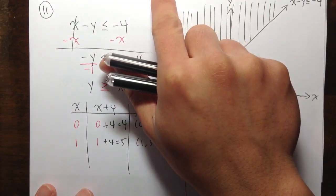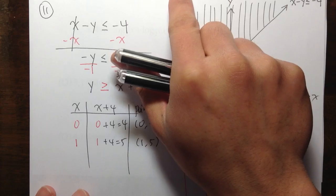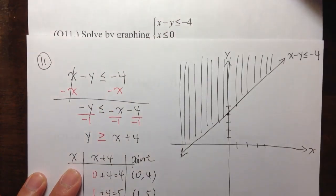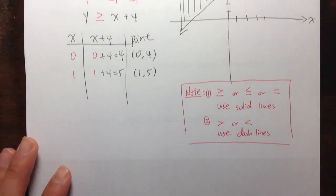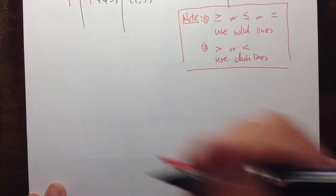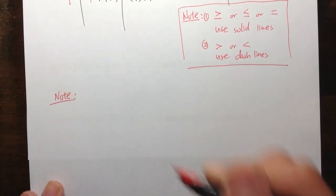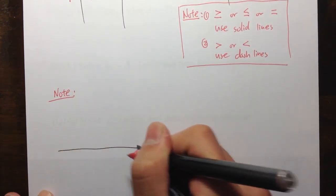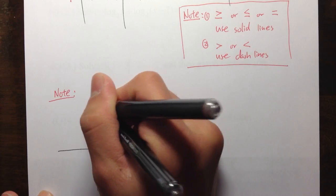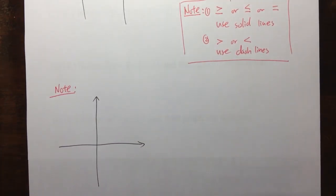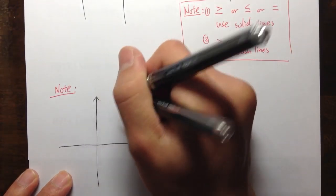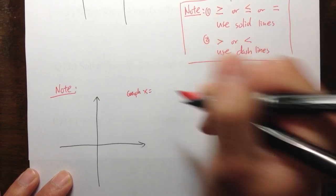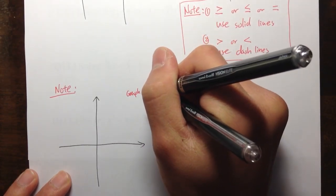Next, we're going to do x is less than or equal to 0. So let me make a second note. When we're talking about graphing, when we have just x equal to a number, how do we graph that? I'll show you some examples and you'll see it.